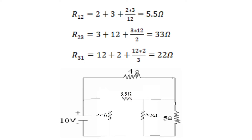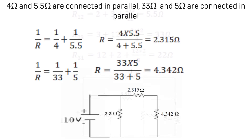By observing the circuit, 4 ohms and 5.5 ohms are connected in parallel. Therefore 1/R equals 1/4 plus 1/5.5, which means R equals (4 × 5.5)/(4 + 5.5) = 2.315 ohms. Also, 33 ohms and 5 ohms are connected in parallel: 1/R equals 1/33 plus 1/5, so R equals (33 × 5)/(33 + 5) = 4.342 ohms.